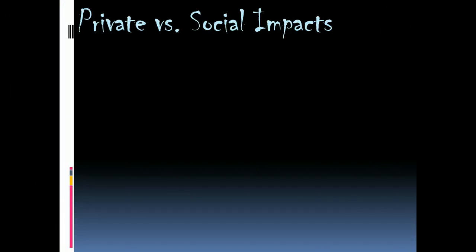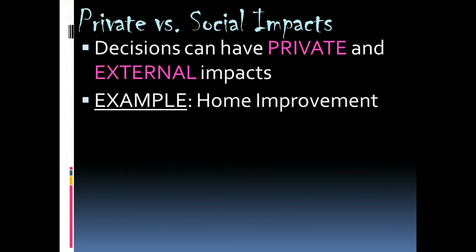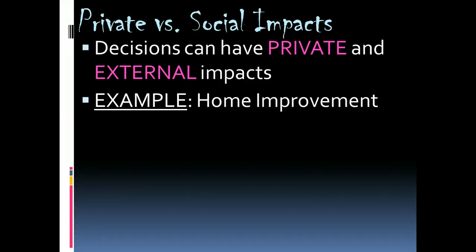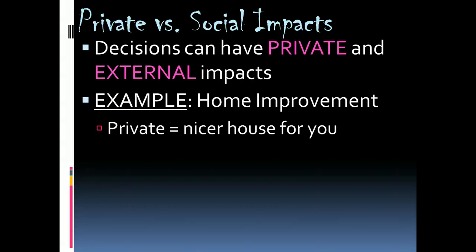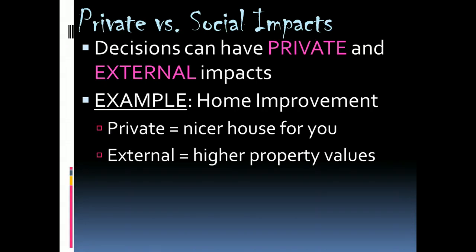Every decision we make has both a private and external impact. Not only do my decisions affect me, but in some cases my decisions may affect other people around me. For example, I might choose to do some home improvement — maybe the outside of my house is an ugly yellow color and I want to paint it brown. The private benefit is that I have a nicer house, but it also has a social benefit in the sense that my neighbors now enjoy higher property values because there's not an eyesore in the neighborhood.